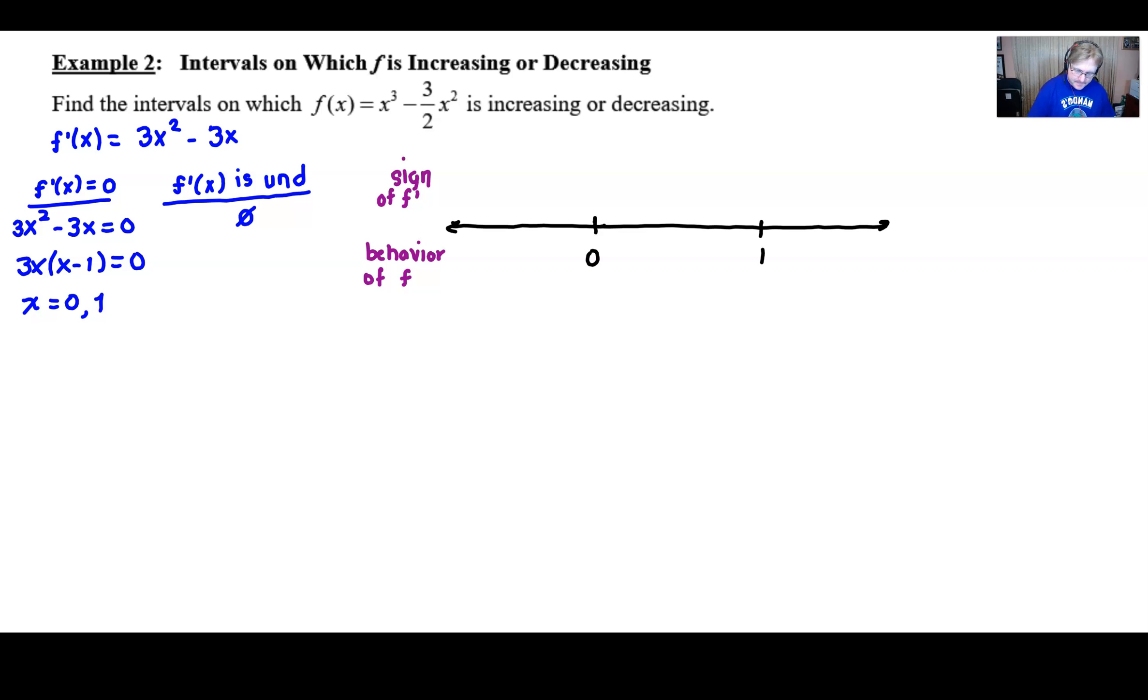Now what's going to happen is you're going to do something. It's actually called the first derivative test. You're going to test numbers in the first derivative, hence the name first derivative test. So I'm going to highlight that derivative because I don't want to lose sight of it. And it doesn't matter which one you use. I always like to use the factored version. That's 3x times (x - 1) because that's going to be probably the easiest to work with.